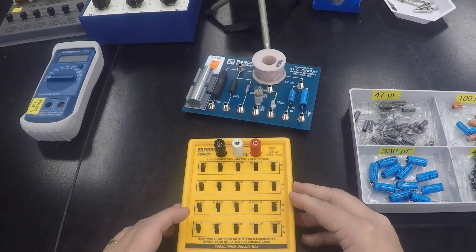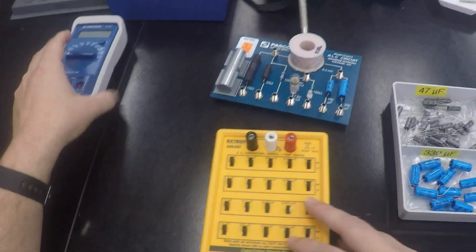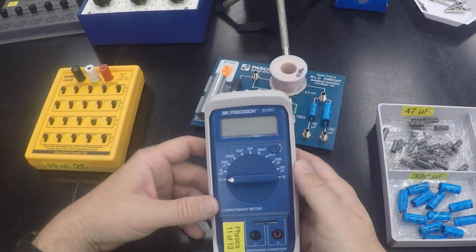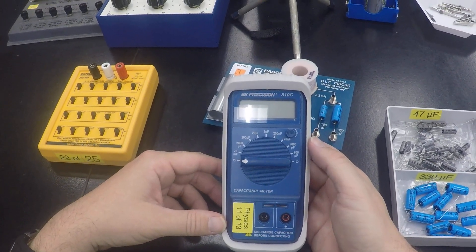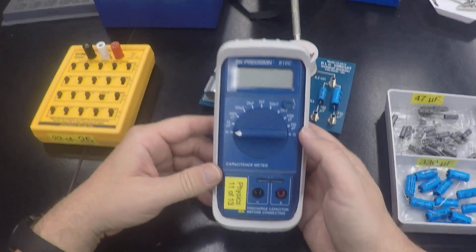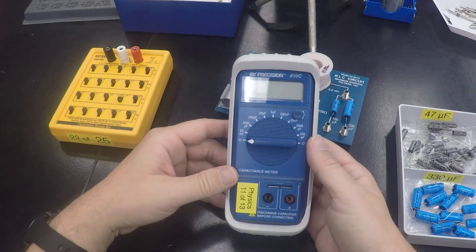So how can we measure the capacitance of these different capacitors in whatever ways we want to do that? That's through a capacitance meter, which I'm just going to call a cap meter from here on out. Its sole purpose in life is to measure capacitance. So this is different than the multimeter itself.